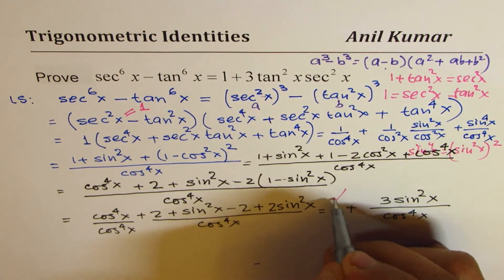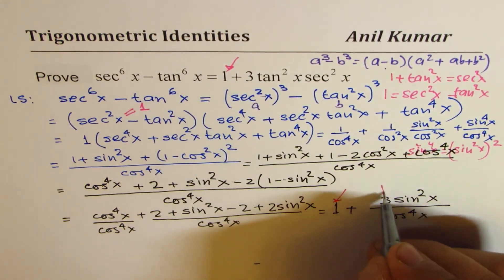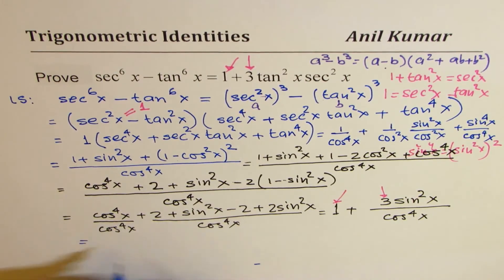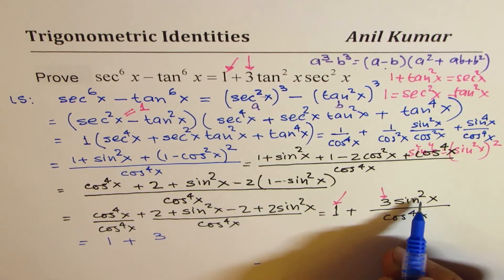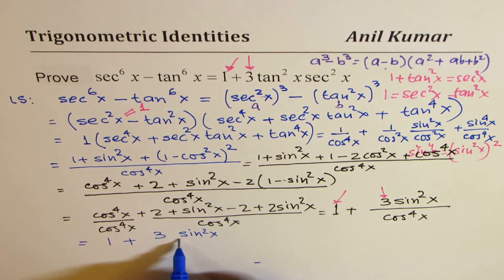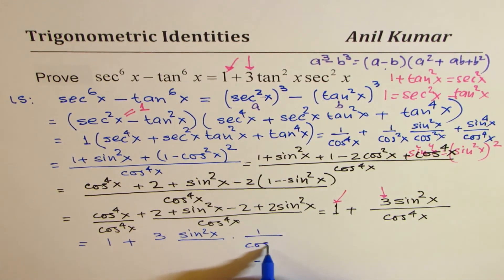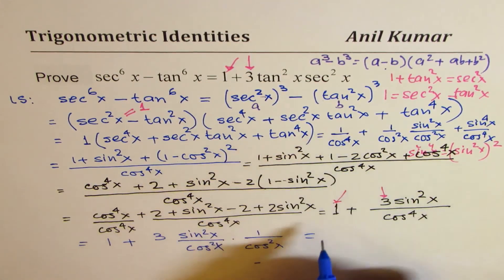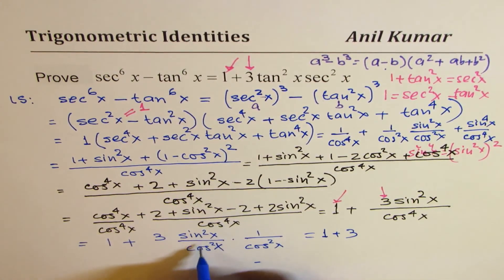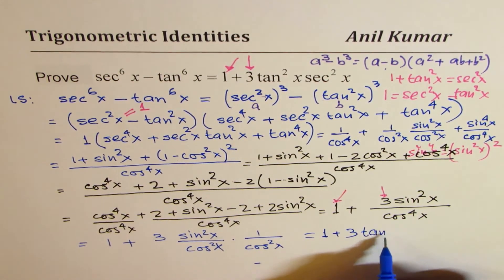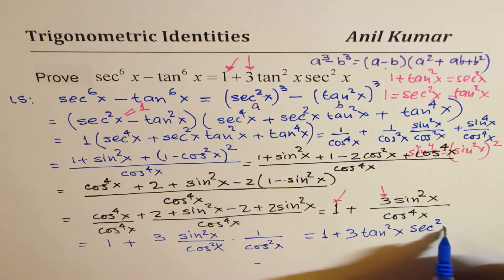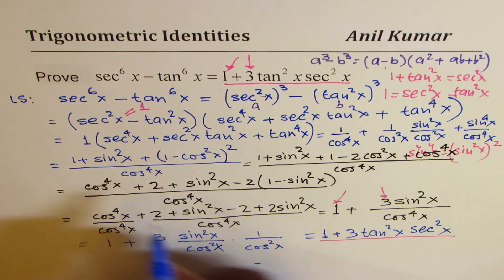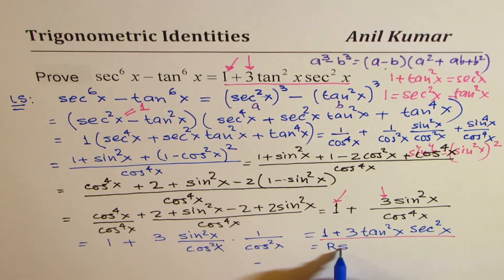As you can see, we got at least one term from the right side, and we also got the factor of 3. We still need tan squared x secant squared x. We rewrite this as 1 plus 3 sine squared x over cos to the power of 4x, which is 1 over cos squared x times cos squared x. Sine over cos is tan, so we get tan squared x, and 1 over cos squared x is secant squared x. So the right side is 1 plus 3 tan squared x secant squared x, and we have shown that the left side equals the right side.